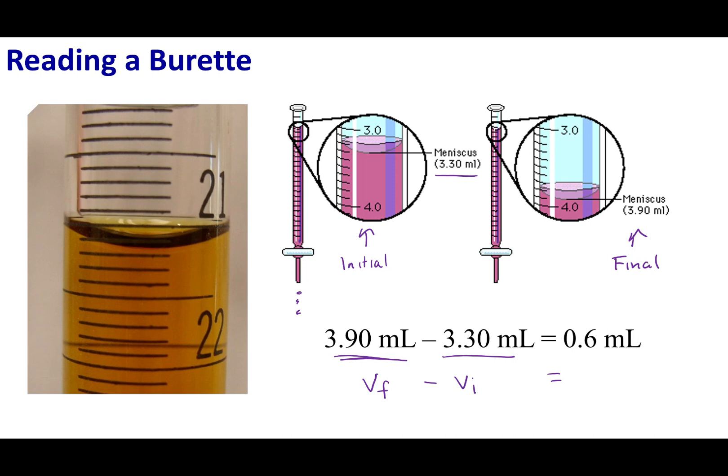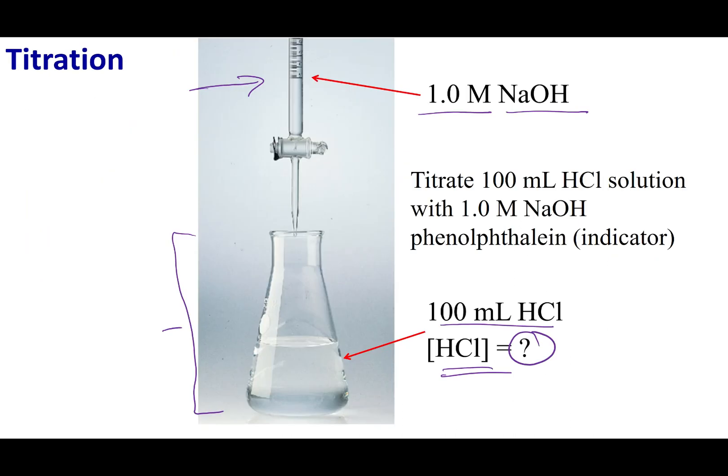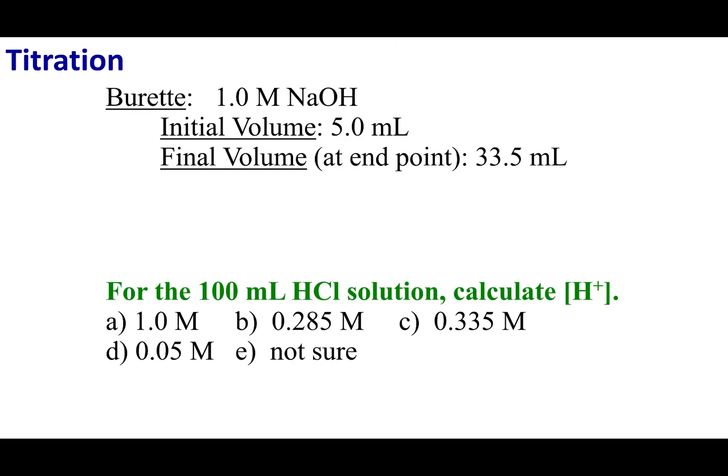So, again, I want to reiterate for a burette, record the exact value that you see on the burette itself. Now, with that said, let's go back to our initial experimental problem and give you pieces of data. So, I'm going to run that titration on that 100 mL of HCl solution. My initial burette reading is going to be 5 mL. And once I reach the endpoint, or when I fully neutralize my solution, what I get is a reading of 33.5 mL. With all this information, I want you to calculate the H plus concentration.